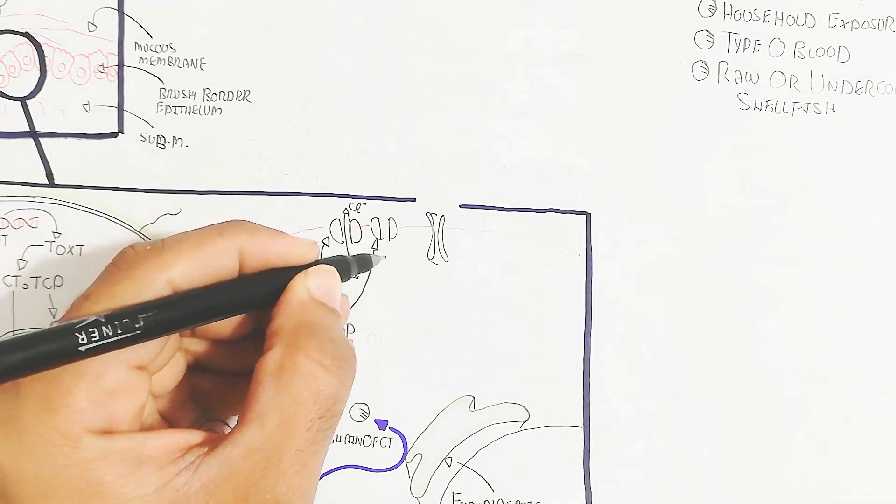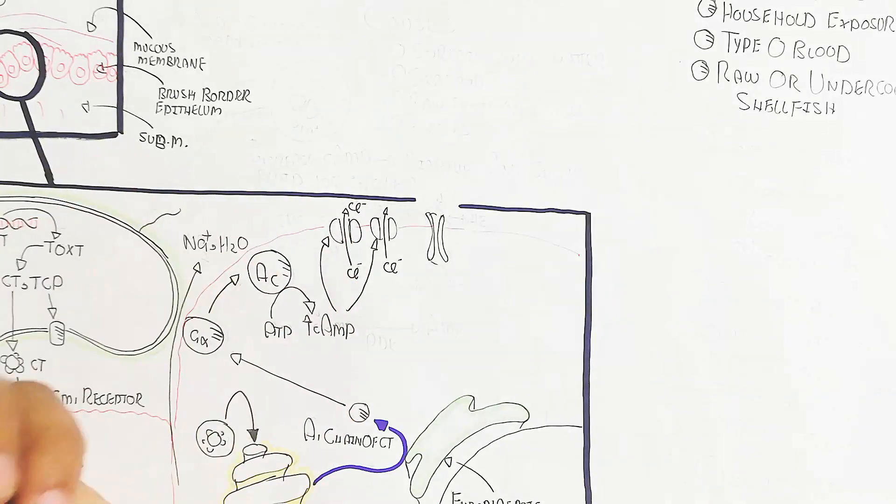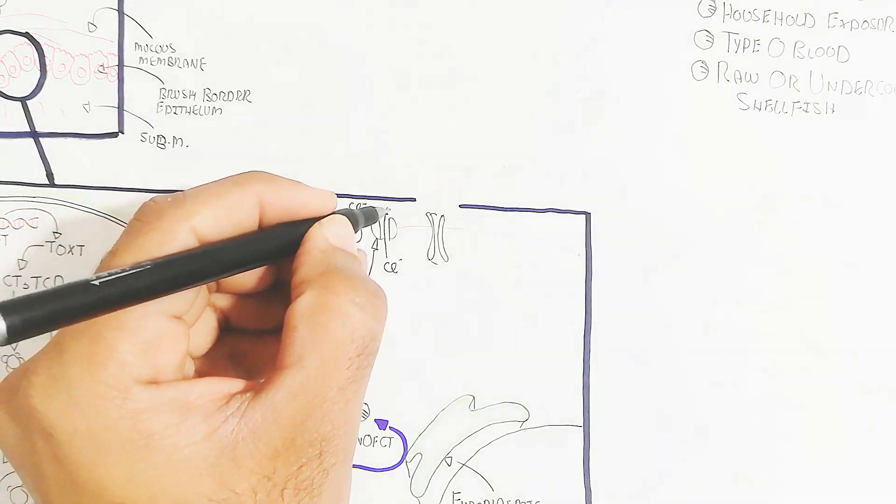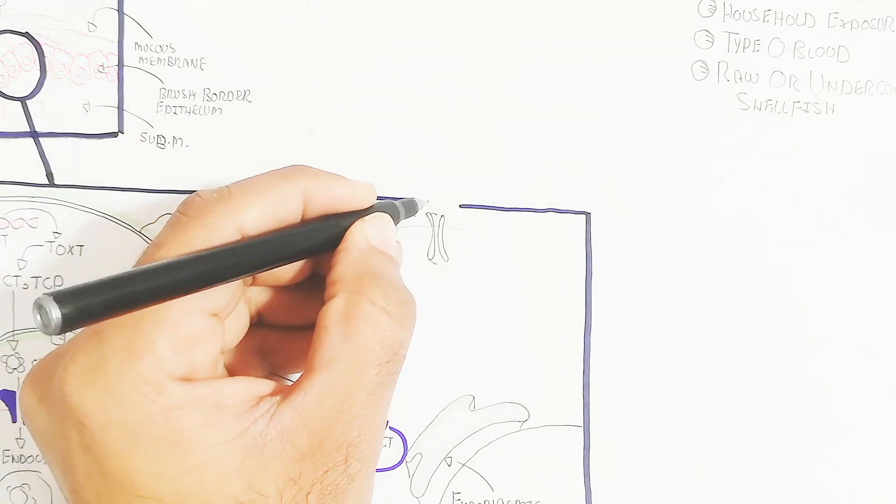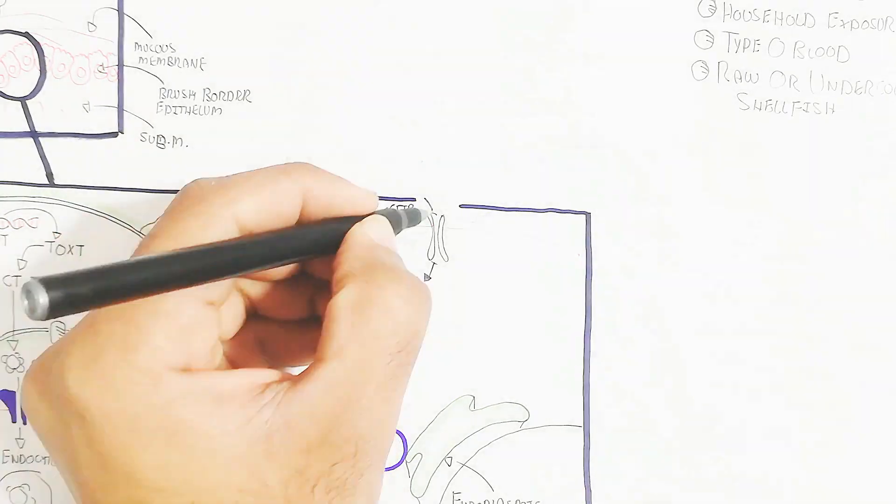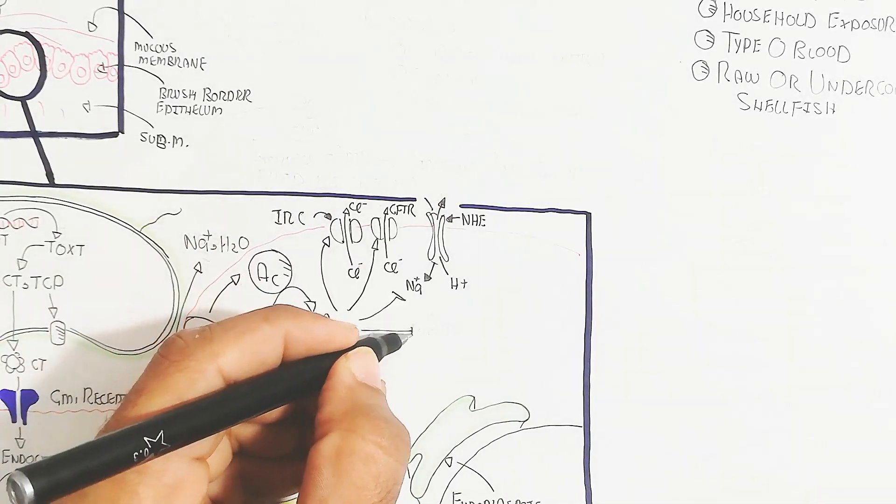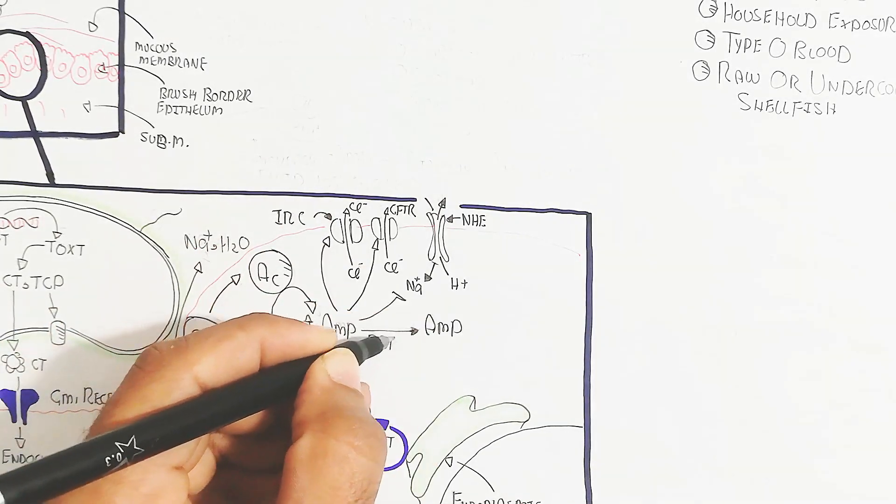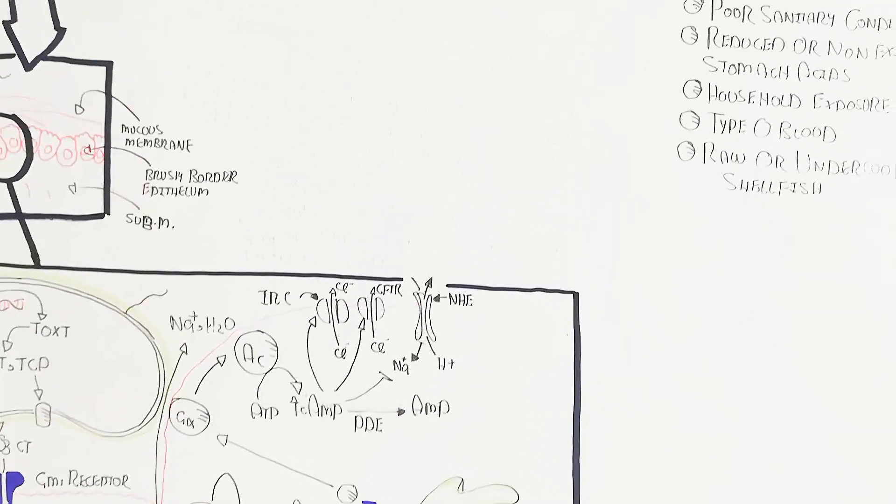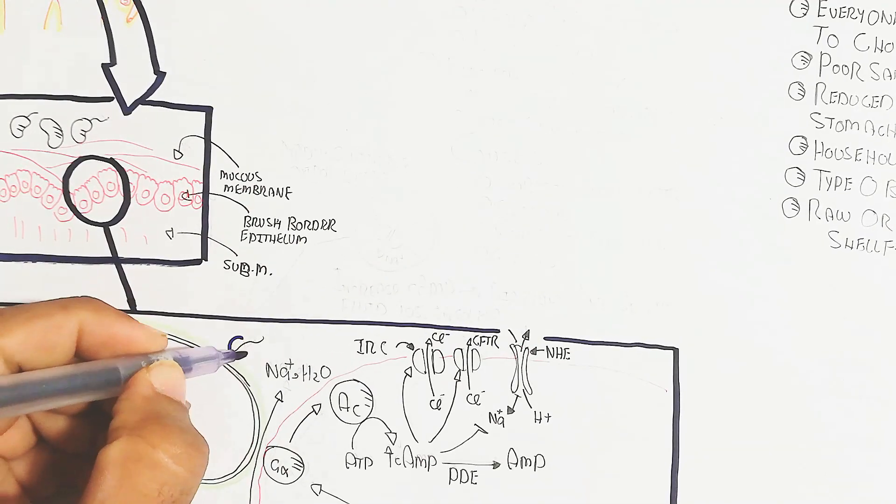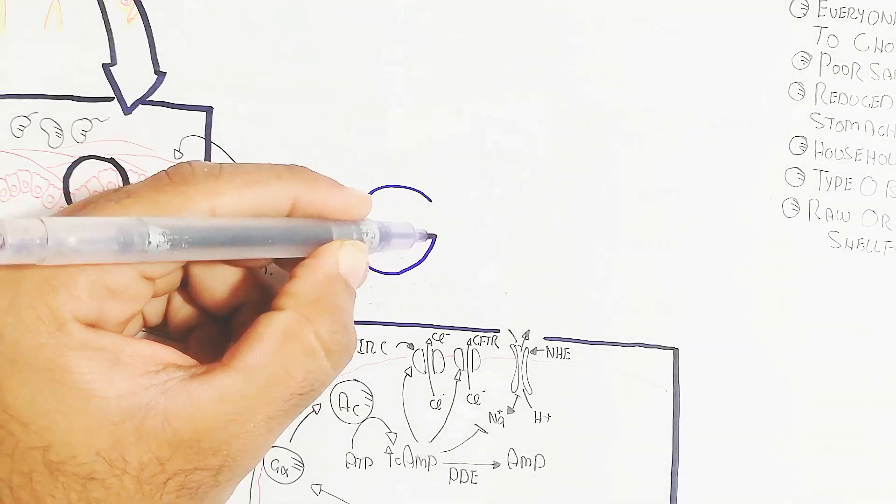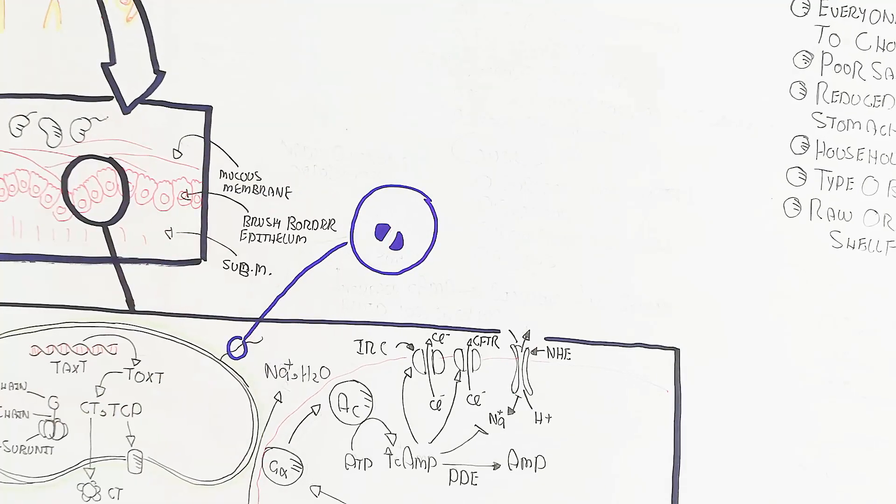The cyclic AMP will trigger the IRC and CFTR channels to cause outflux of chloride. The sodium-hydrogen exchange will lead to more protons pumping out. In this way, water is not absorbed. Too much water in the large intestine will lead to diarrhea.